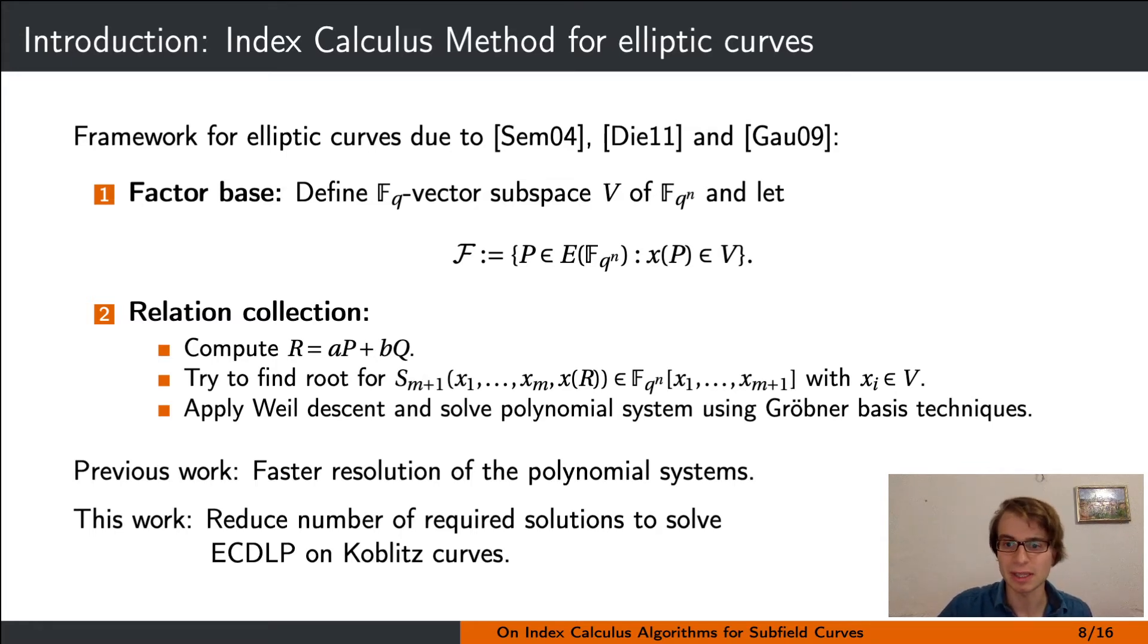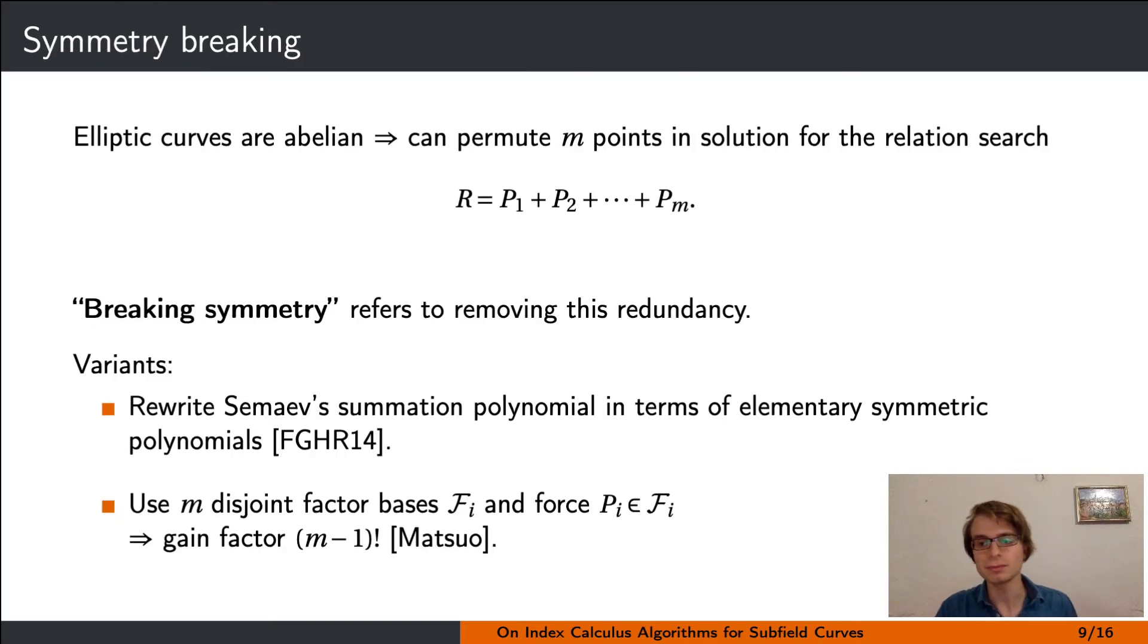Let's first make another observation. Elliptic curves are abelian groups, and therefore solutions to the point decomposition will always have m factorial many solutions in the previous framework, all corresponding to the same decomposition, since we can reorder the points in the sum.